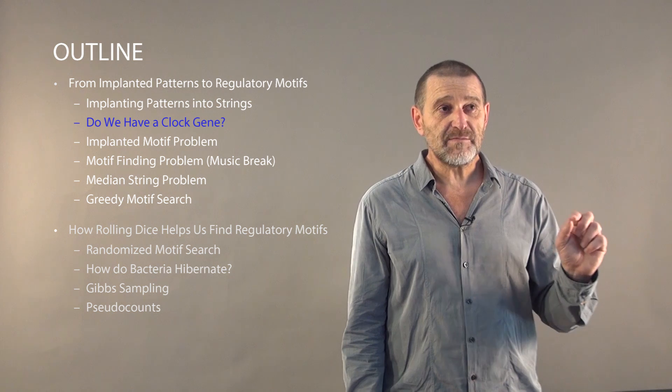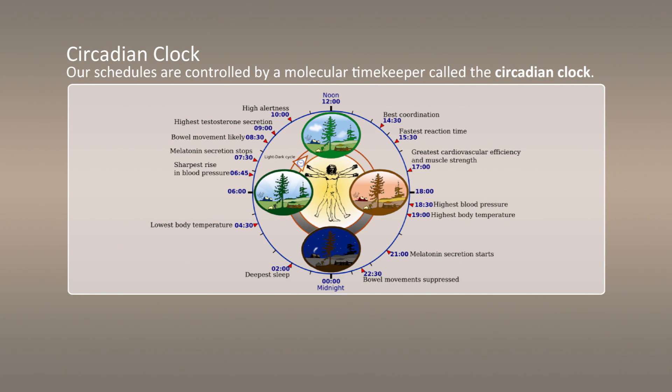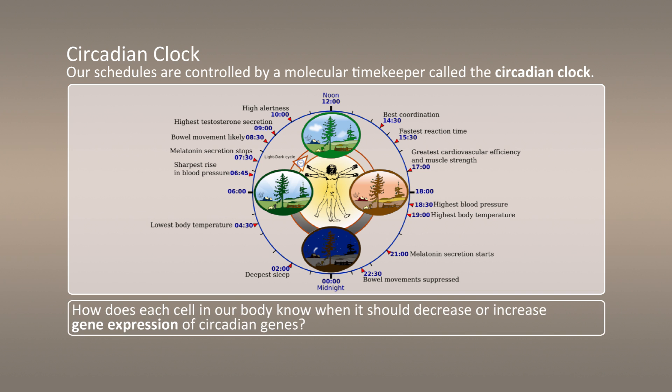My next question will be, do we have a clock gene? Think about our daily schedule and think how our life depends on day and night. In every cell, we probably have to express different proteins depending on what time of the day it is. But who are these molecular timekeepers who tell the cells in our body what is the time right now? How are these molecular timekeepers able to change gene expression to produce proteins needed at night as opposed to proteins needed in the morning?